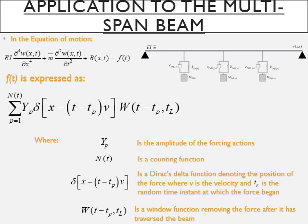Controls the position of the force and tₚ is the random time instant at which the force began, and finally we have the window function. This removes the force after it has traversed the beam where tₗ is the length of time that it takes for the force to cross the length of the beam.